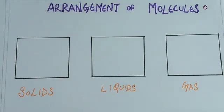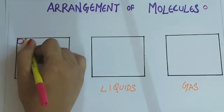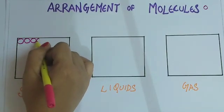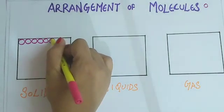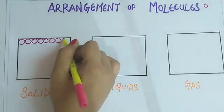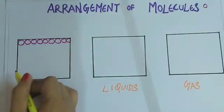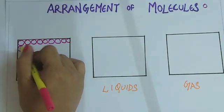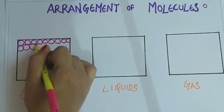In solids, the molecular arrangement is like this. The molecules are very close to each other. They do not have any intermolecular space between them. That is why they are very tightly packed or you can say rigid. So you have to draw the circles very close to each other.